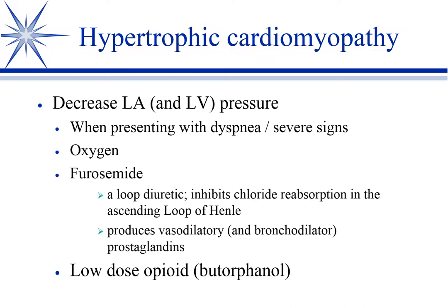Furosemide decreases preload. Preload refers to the amount of blood returning to the heart on the right side. Afterload is the pressure that the left side of the heart has to overcome to push the blood out to the tissues. Both can go astray in heart failure scenarios. You see a benefit in pulmonary edema almost immediately from furosemide that has nothing to do with its diuretic preload effects.